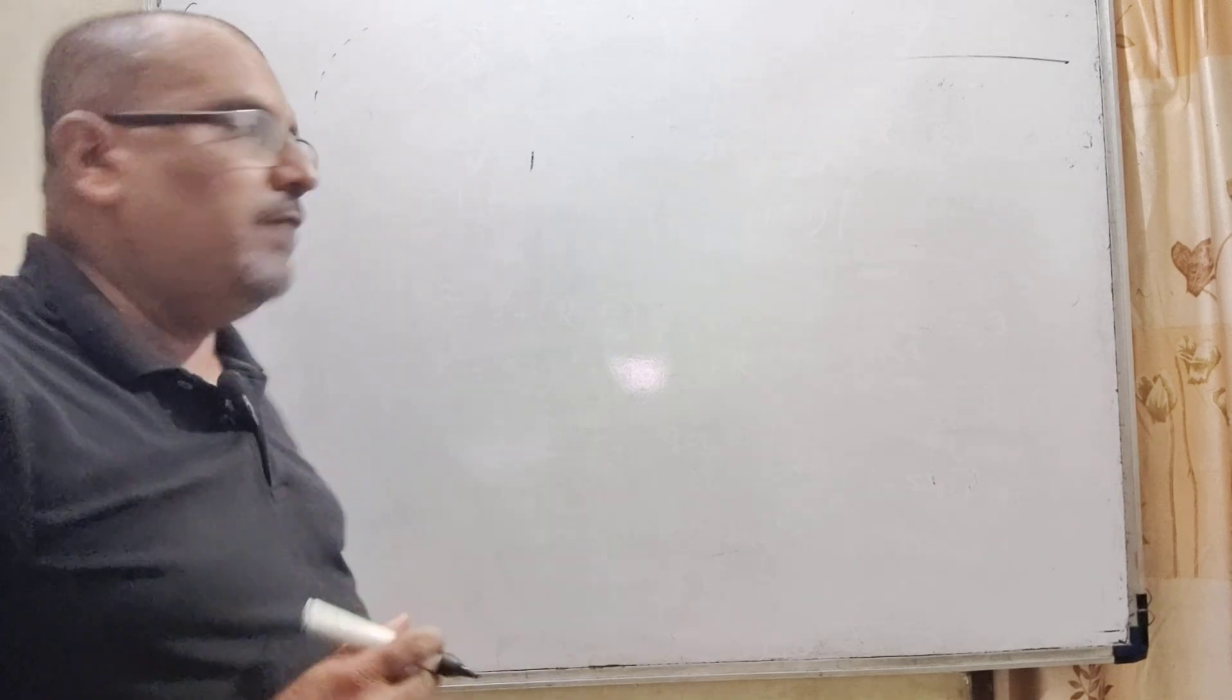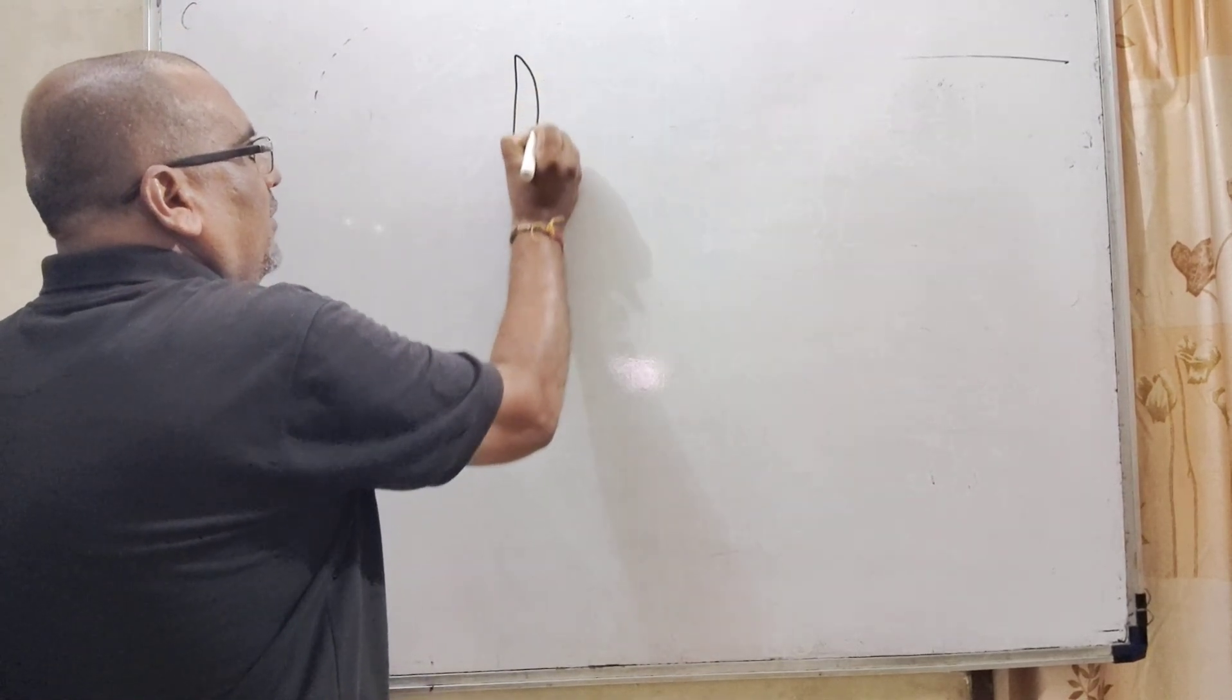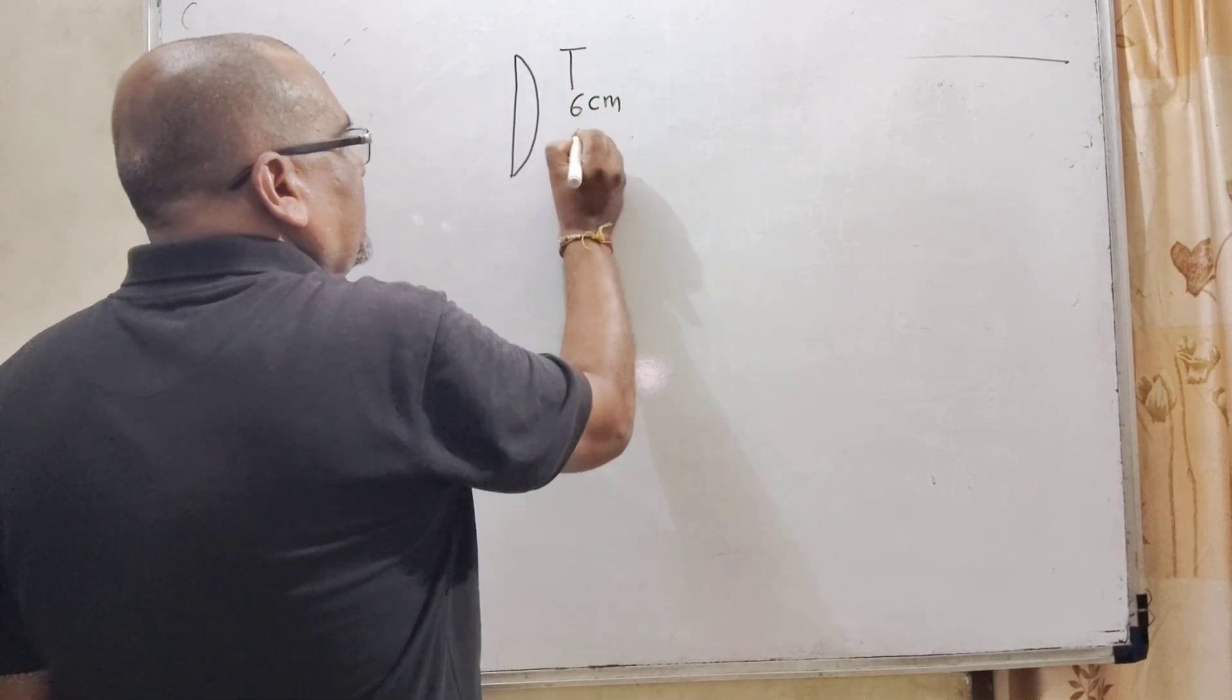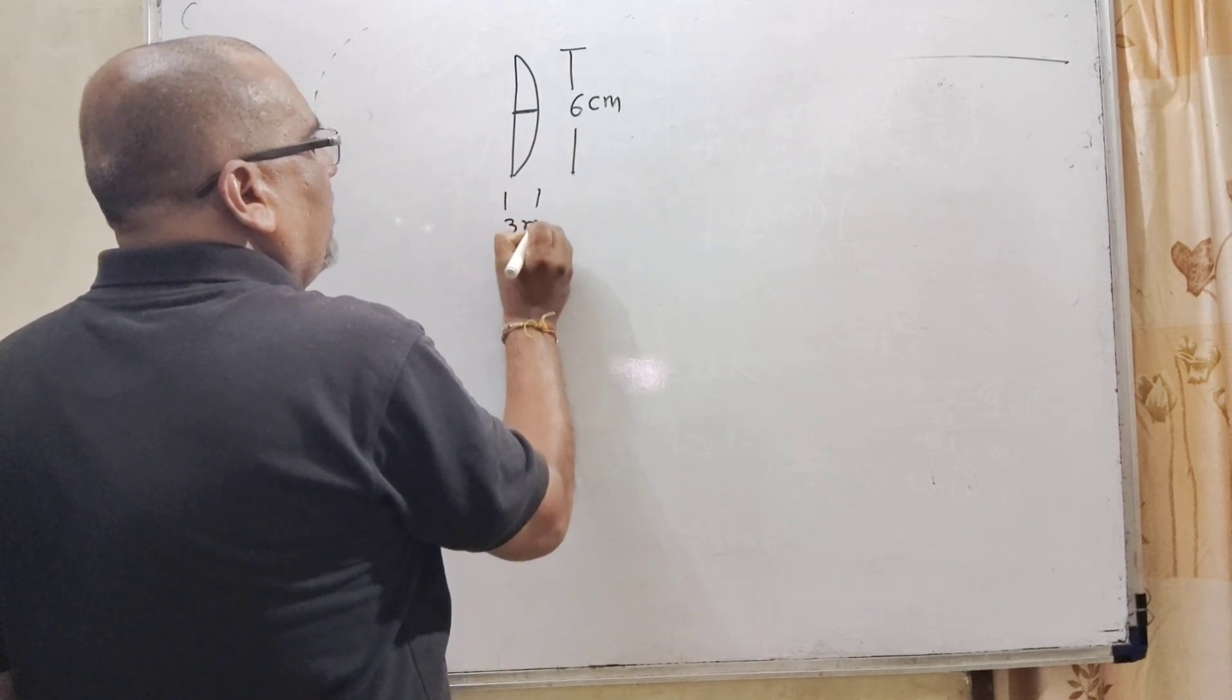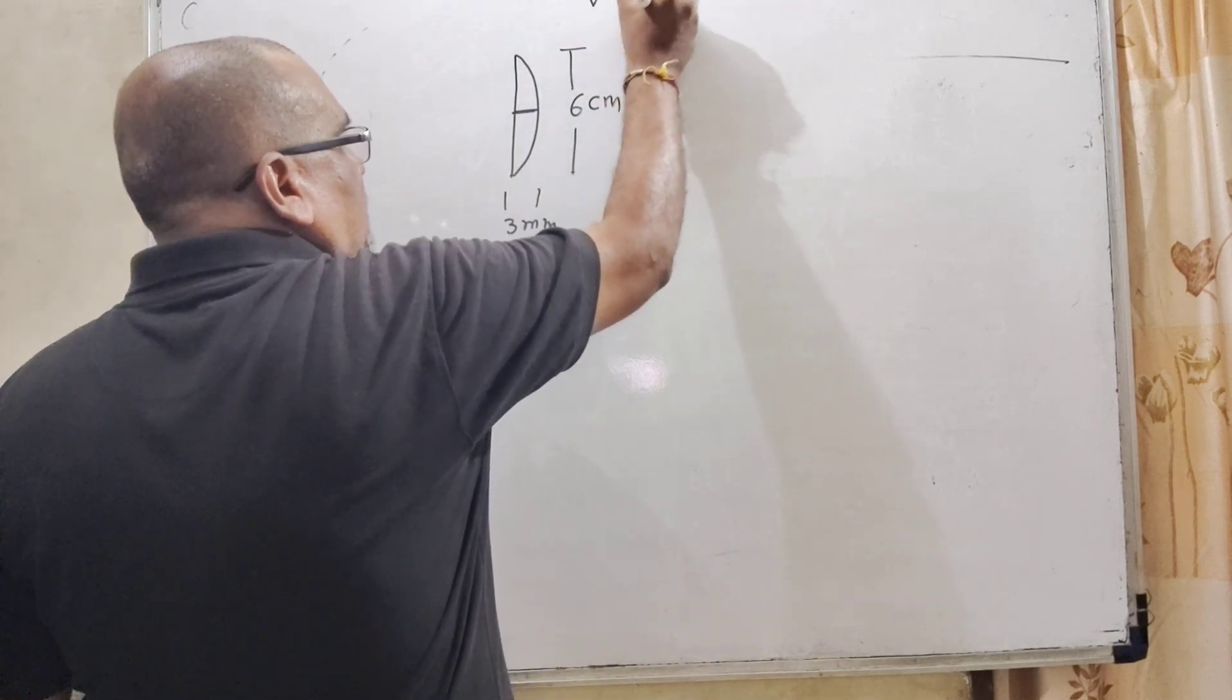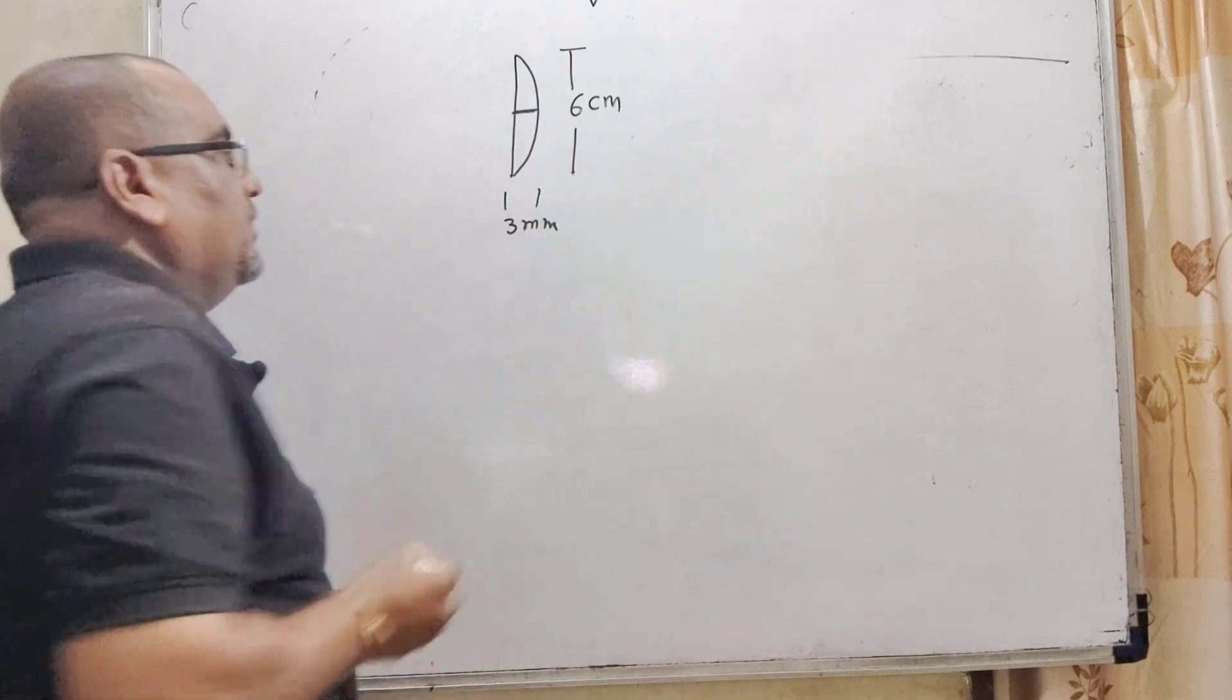Now, let us first understand what the question says. Here, we have given a plano convex lens. Its diameter is given 6 cm and the thickness is given 3 mm. And speed of light in medium is 2 × 10^8 meter per second.